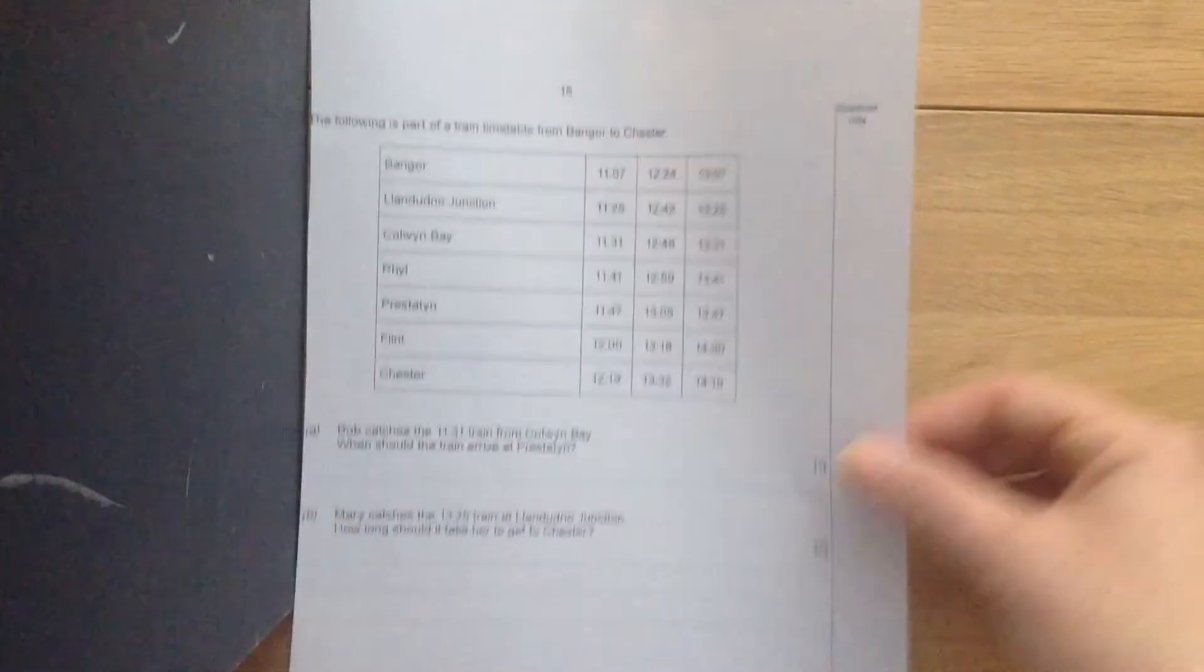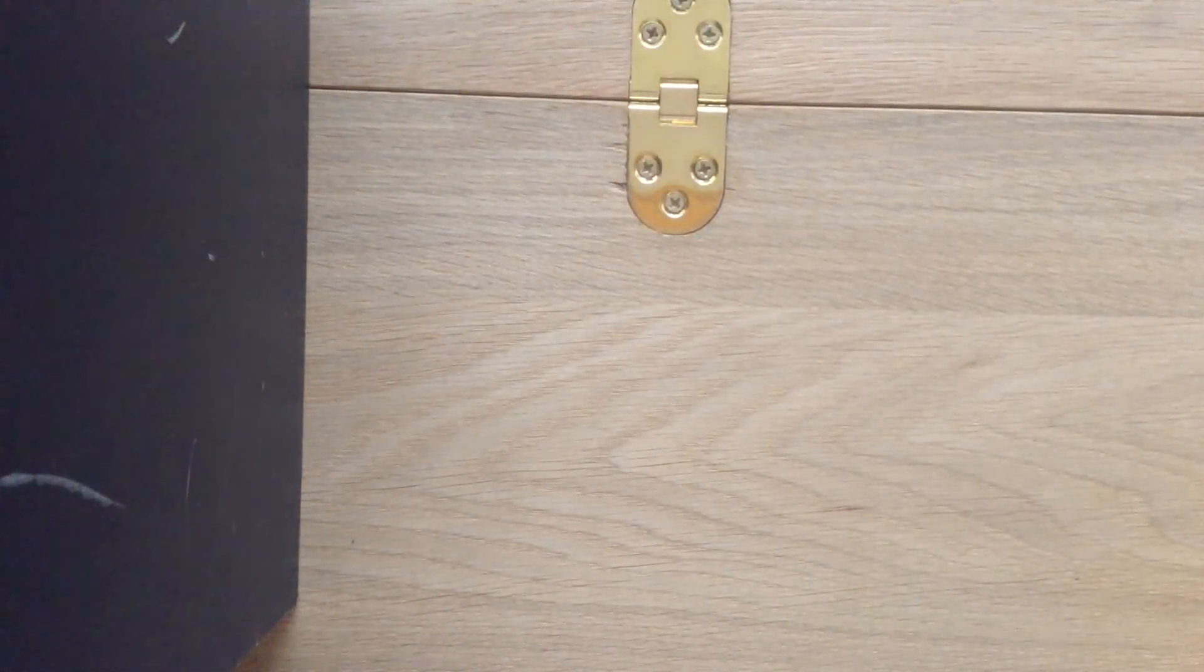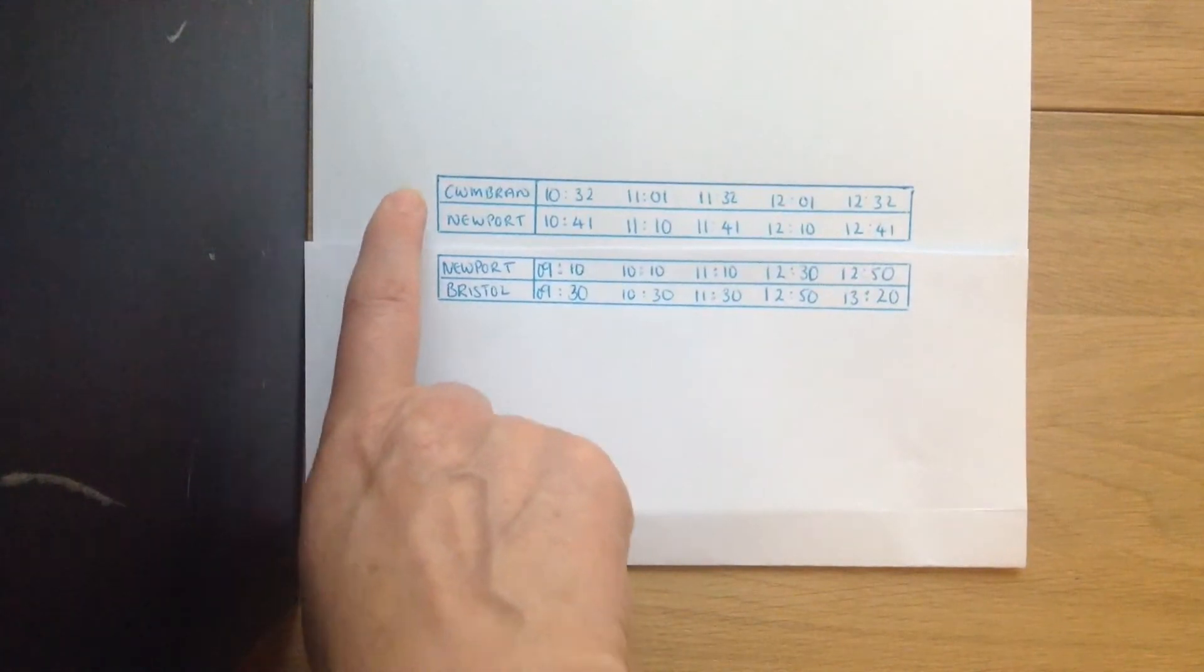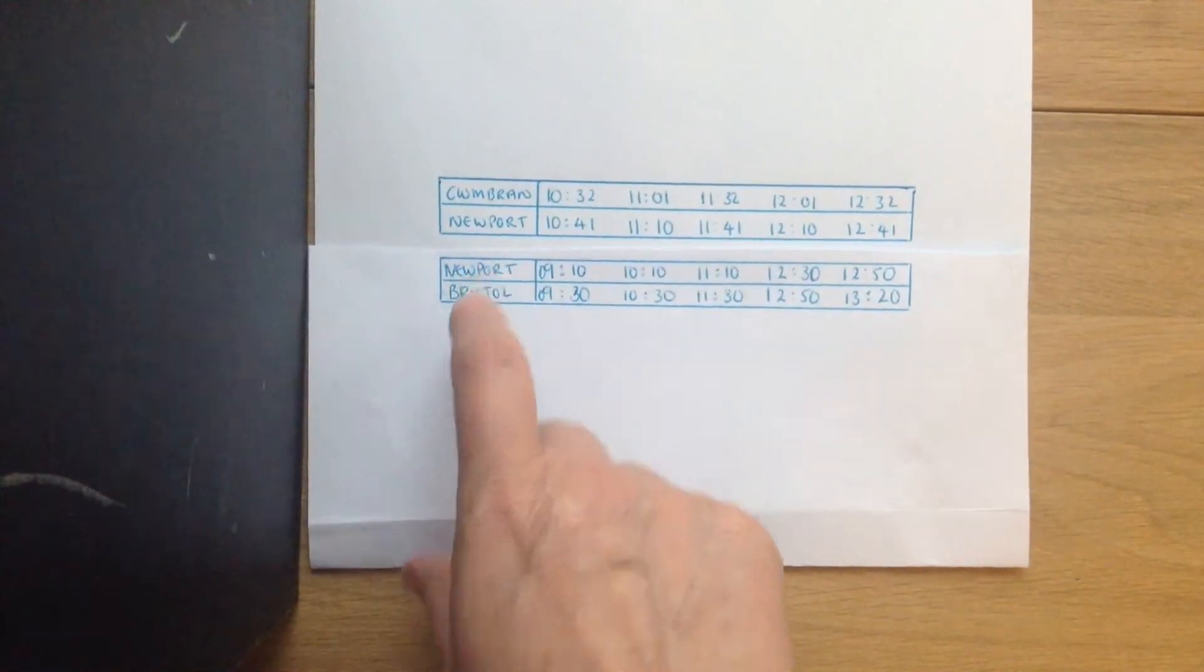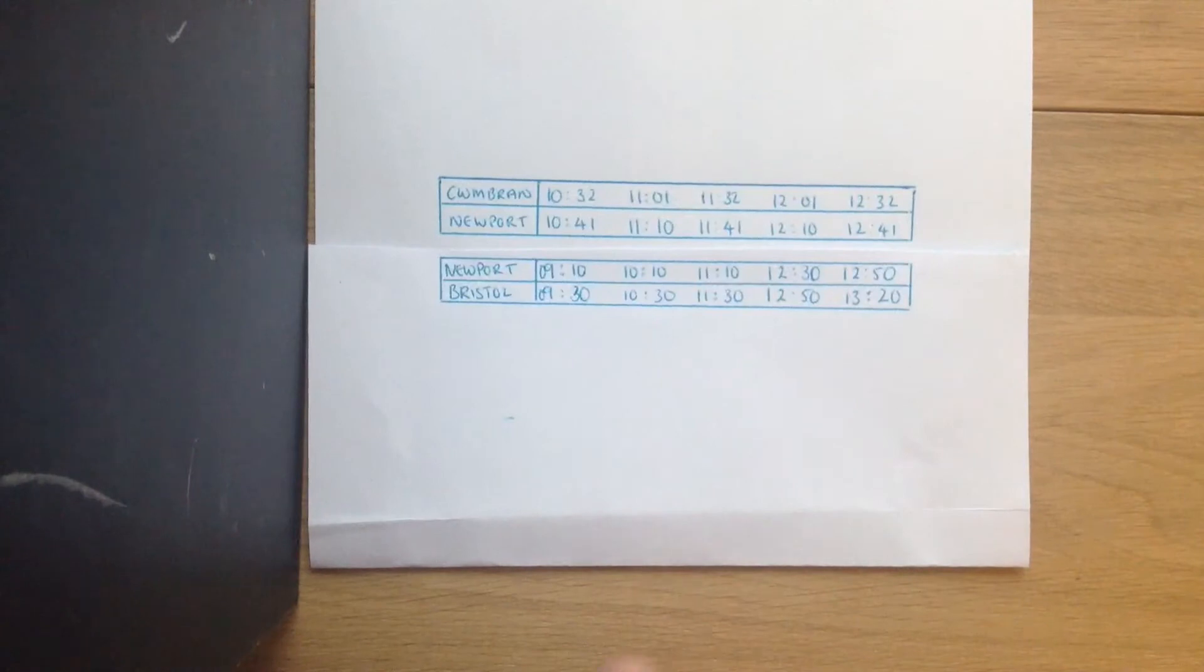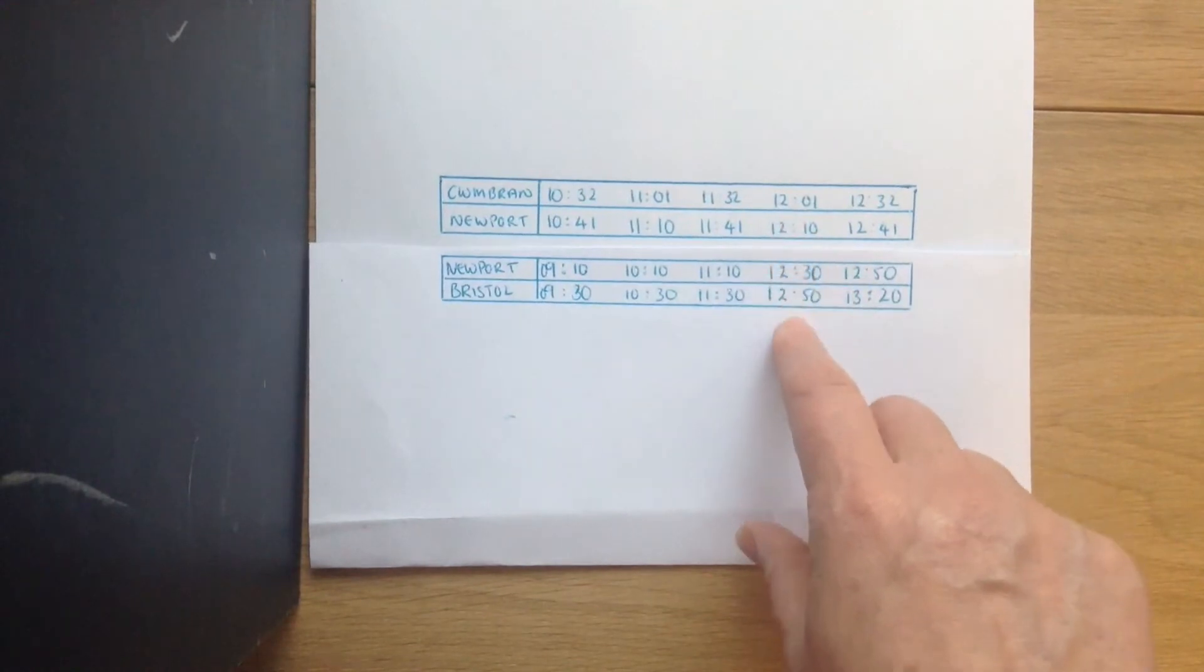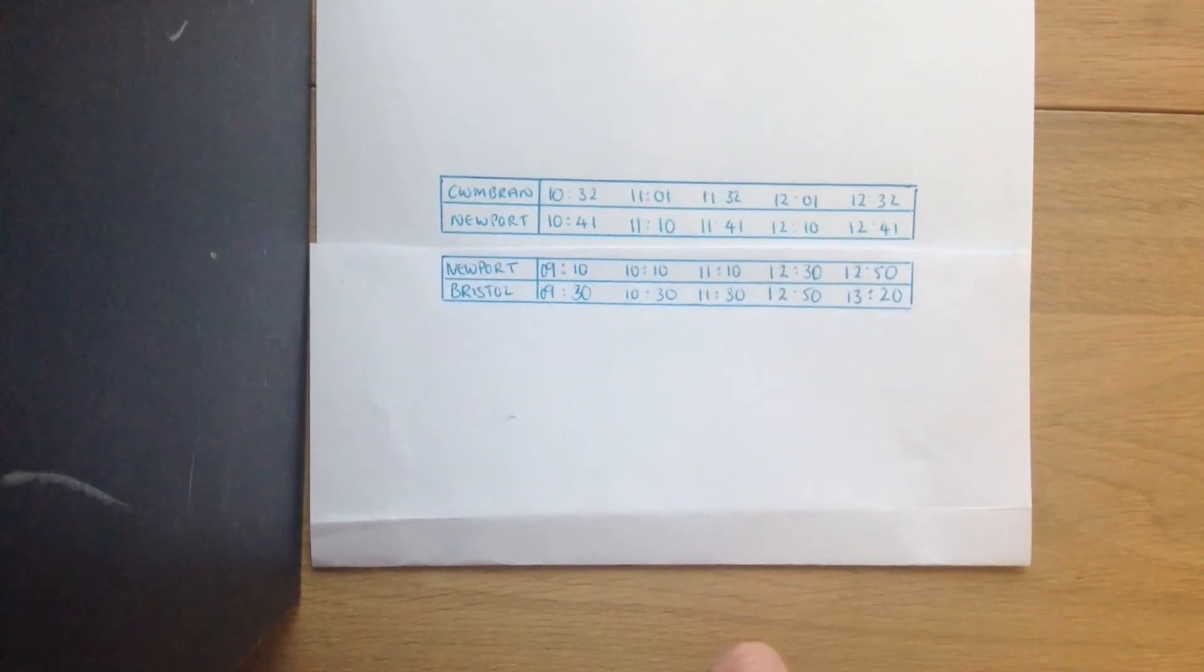The other thing they do is they give you more than one timetable. For example here, we've got a timetable going from Cumberland to Newport, and then from Newport to Bristol. Now the mistake people make is they think that if they're on the 1201, then they have to stay on this train to Bristol.